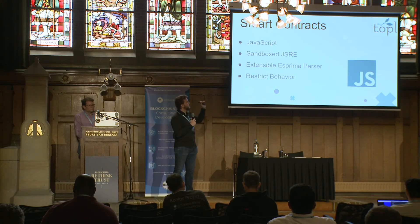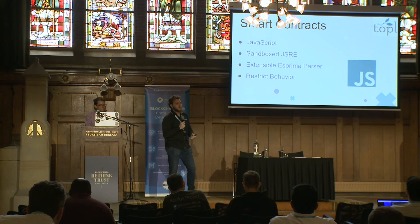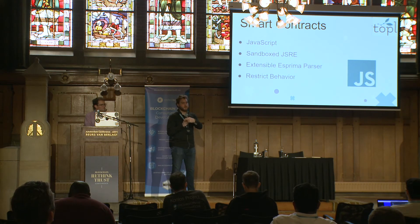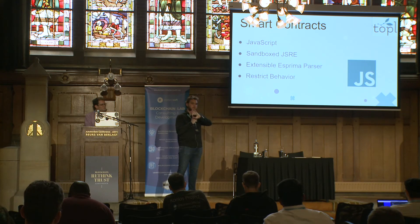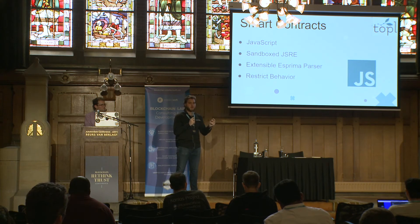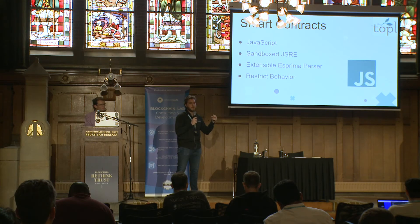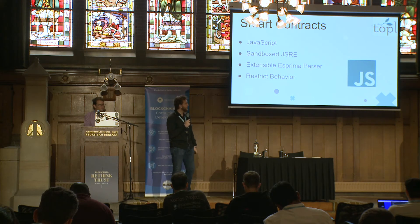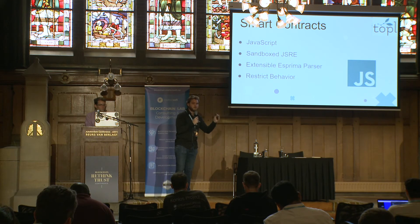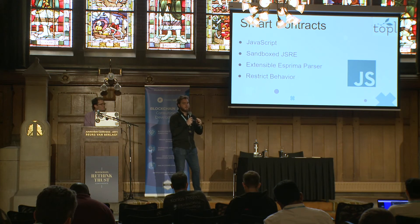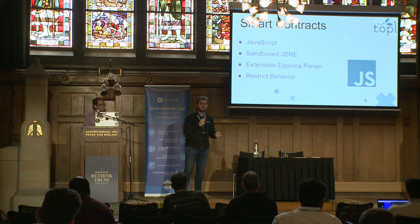NASHORN is currently in talks of being deprecated, but there's GraalVM and other solutions available if NASHORN gets deprecated. The smart contracts themselves are written in JavaScript, and the runtime environment is sandboxed. It's running in the same JVM as the Scala blockchain, and they're both running concurrently alongside each other, but completely sandboxed from each other. There are no leaks, no holes, and no way for these two systems to have a cross-site type attack where you could write something in JavaScript that runs malicious code through the blockchain or the actual client itself.